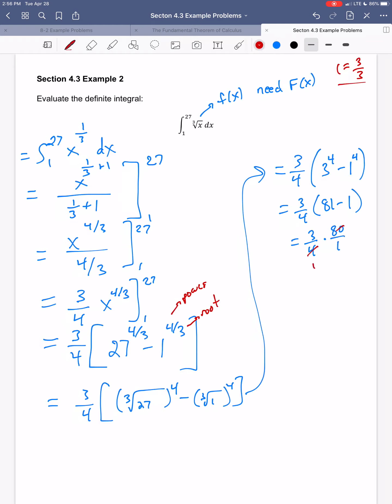4 goes into itself once. 4 goes into 80 20 times. And so I would just get 60 for the answer.